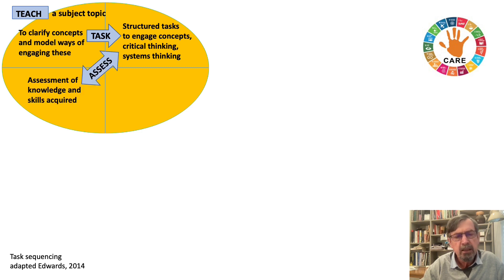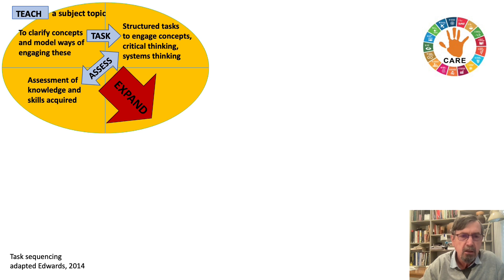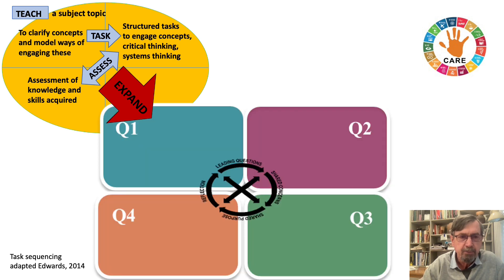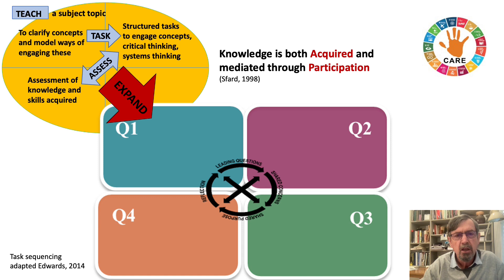What Edwards points out is that it's possible to expand this around agency — that the learners take up the knowledge and work with it more. And that is good teaching. So using her four quadrant sequence, what Svart points out is that in curriculum settings, we have both the acquisition of knowledge and learning through participation.